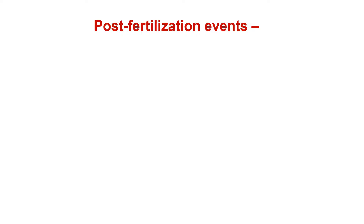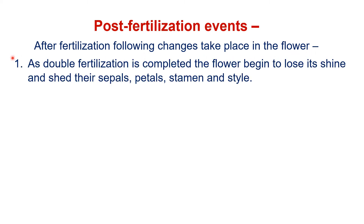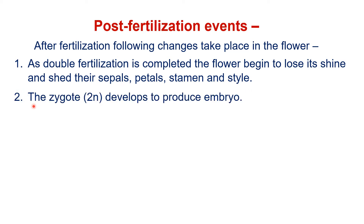Now I will go to the last event in sexual reproduction: post-fertilization event. After fertilization, the following changes take place in the flower. First, as double fertilization is completed, the flower begins to lose its shine and sheds its sepals, petals, stamen, and style. Second, the zygote develops to produce an embryo.